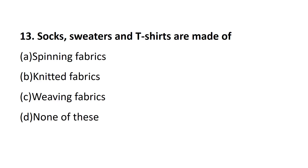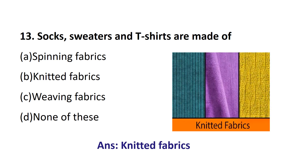Question number 13. Socks, sweaters, and t-shirts are made of: Option A, Spinning fabrics; Option B, Knitted fabrics; Option C, Weaving fabrics; Option D, None of these. The answer is Option B, Knitted fabrics.